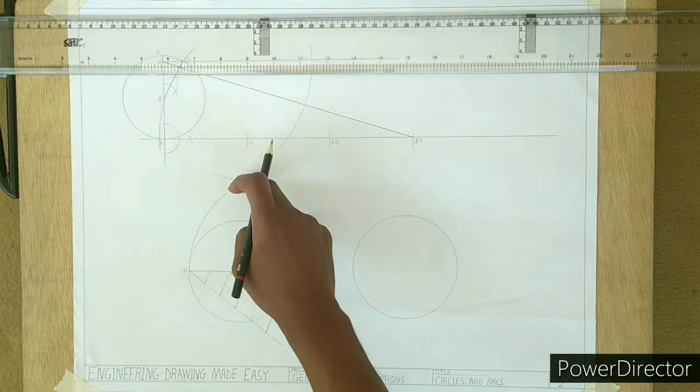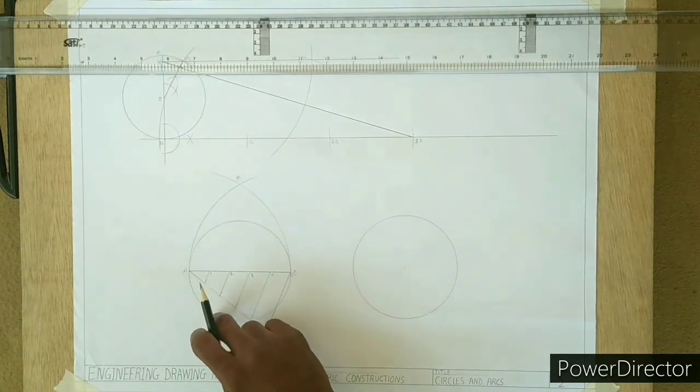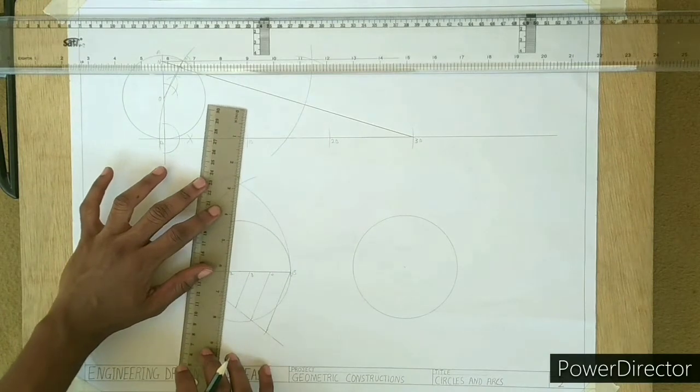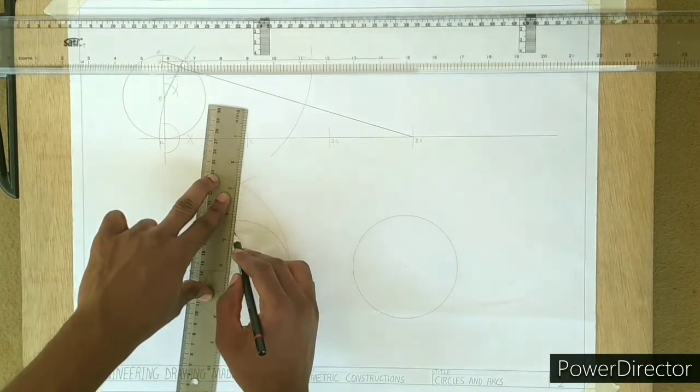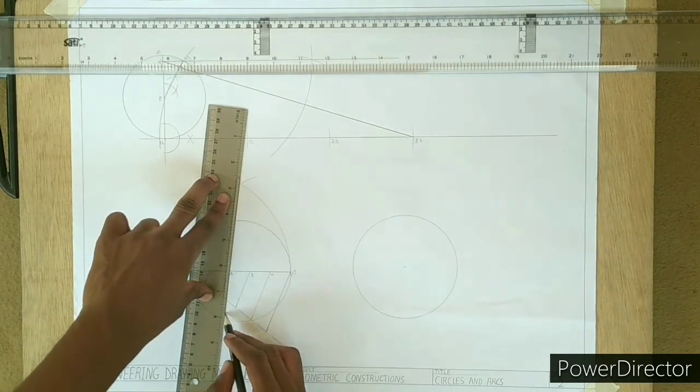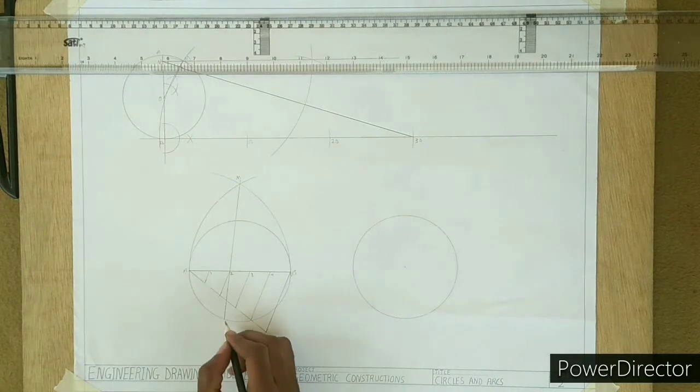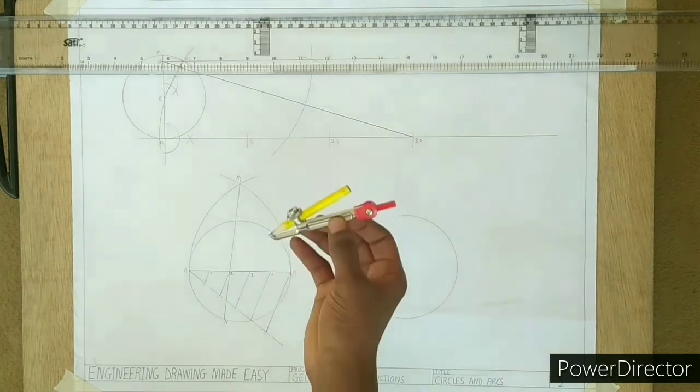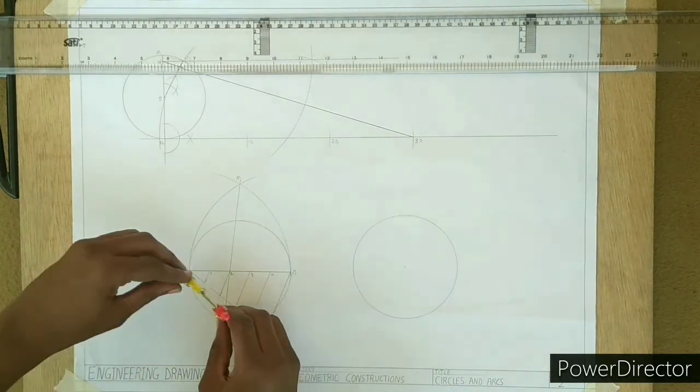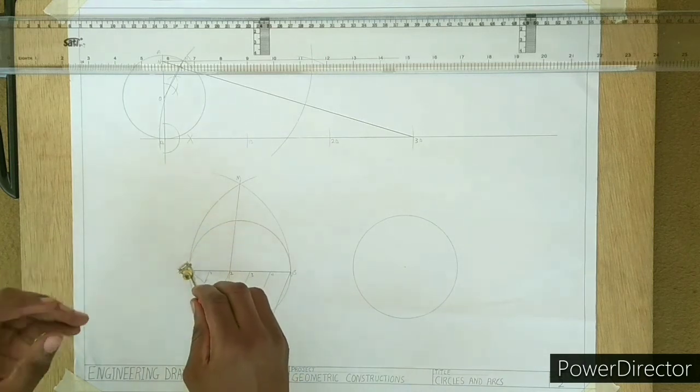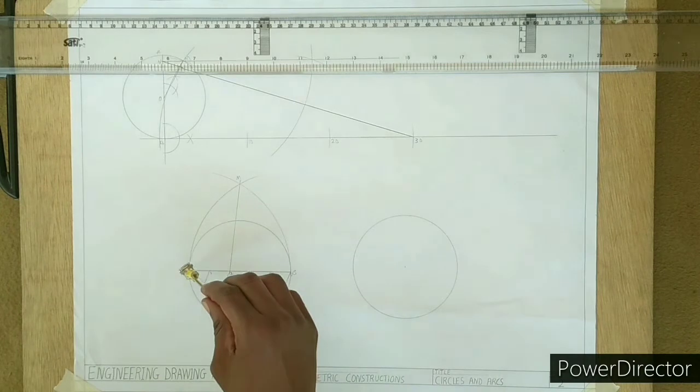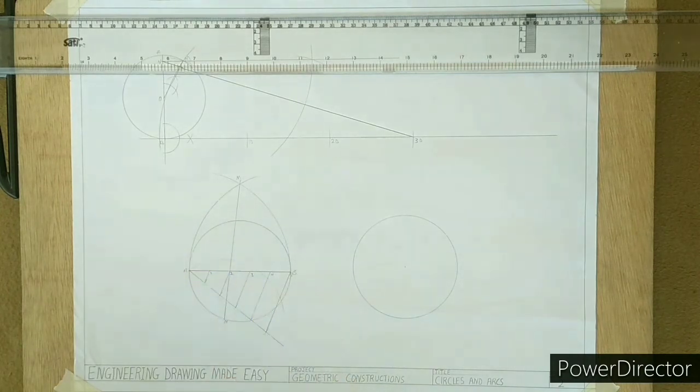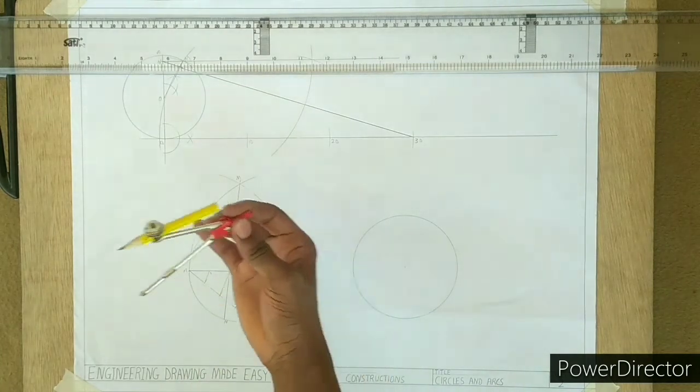The third step is to draw a line from M through 2 to touch the circle as N. The fourth step is to draw an arc with N as the center and NA as radius to intersect the circle at P. Repeat the step to get Q and R.